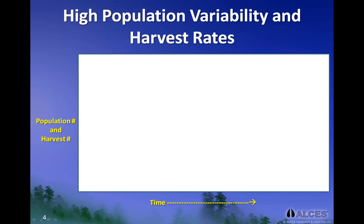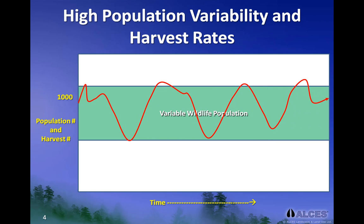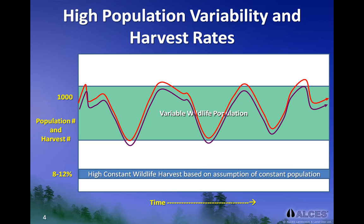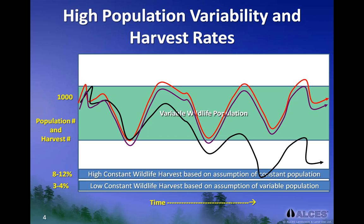In comparison, a population with high variability shows much broader swings in numbers over time. The range of variation is much wider, as shown by the broad green band. The risk with highly variable populations is that if we assume that the population is constant and use the same relatively high harvest rate, when the population declines to its lower range due to natural mortality, our harvest mortality will increase the total mortality on the population and may cause the population to decline much lower than its range of natural variability. Thus, in populations with high year-to-year variability, which is a general characteristic of many northern wildlife populations, a conservative strategy is to apply a lower overall rate of harvest to minimize the risk of over-harvest during years when animal abundance is naturally low.